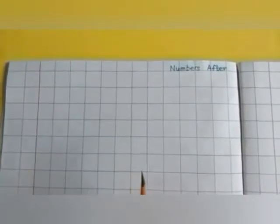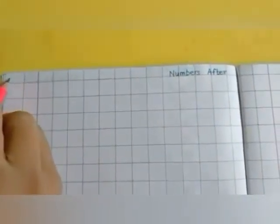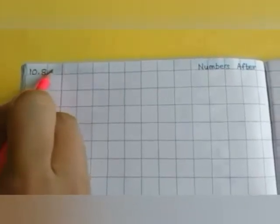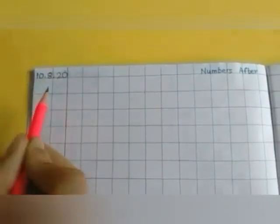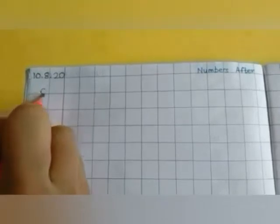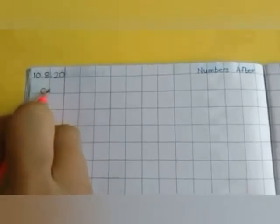Can you see the red margin here? On the left side of the margin, in the corner, we will write today's date: 10.8.2020. Below the date, we will write classwork, that is C.W.